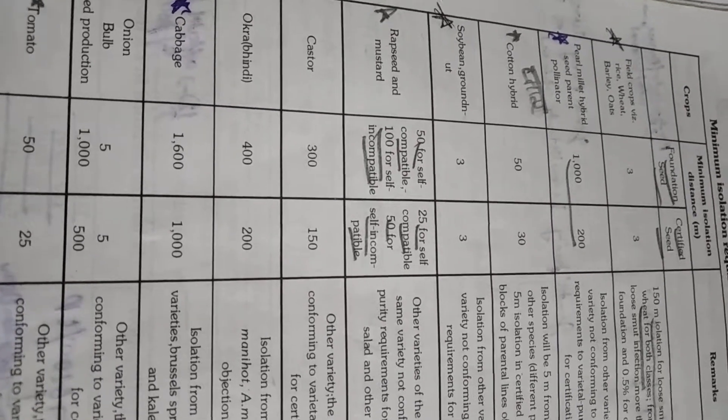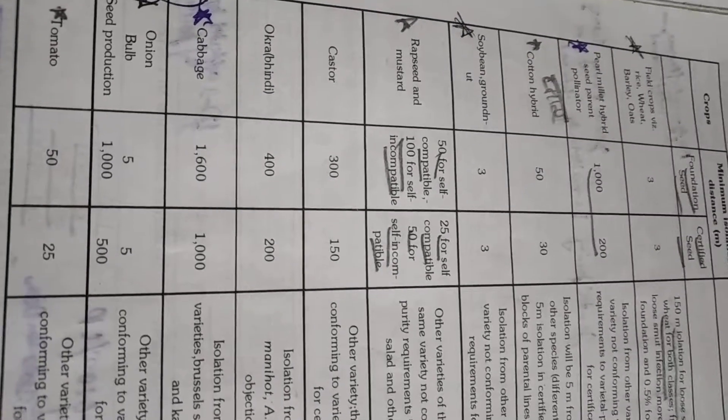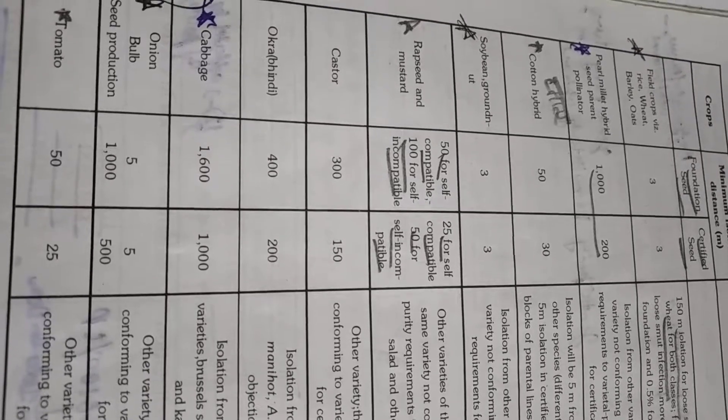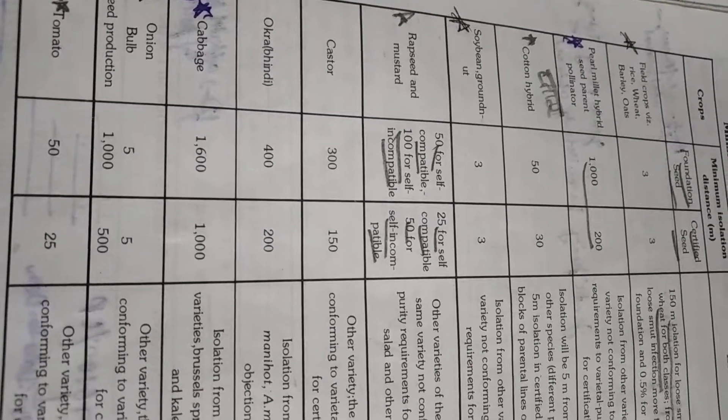Like cabbage is the highly cross-pollinated crop. So 1600 for foundation seed and for certified seed it is 1000 m. Please remember it. And rest all are easy, you can remember. But field crops, all the self-pollinated crops, wheat, barley, oat this is most important. This you remember. For onion also you remember 1500 and tomato 50 and 25. These three you remember students. These are very important.